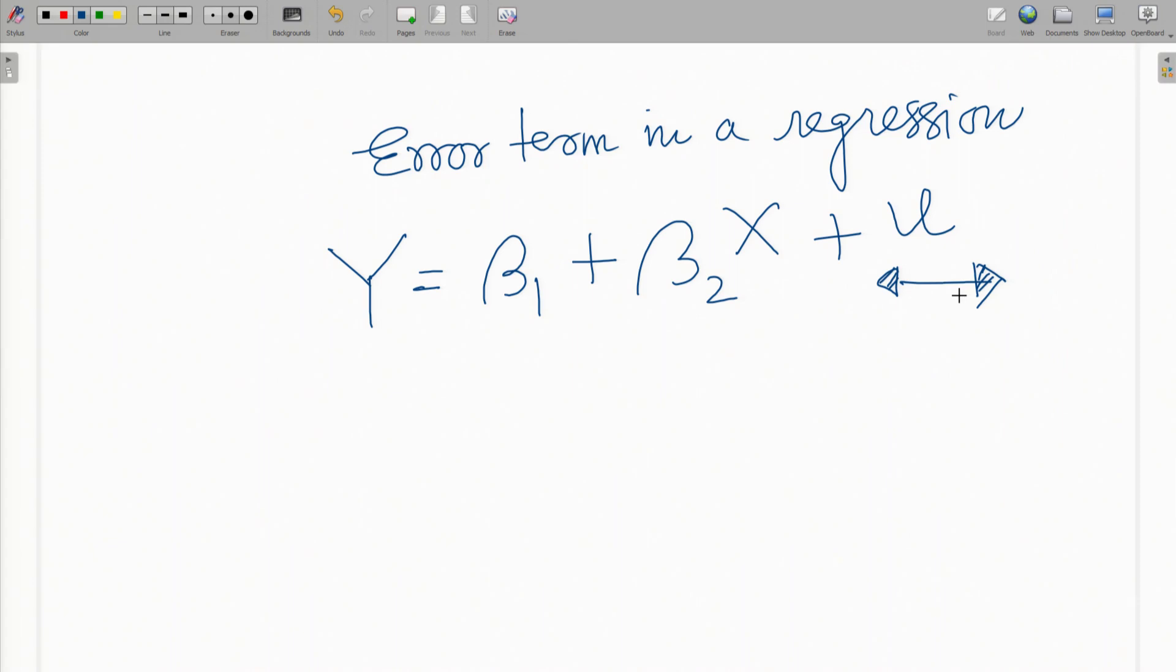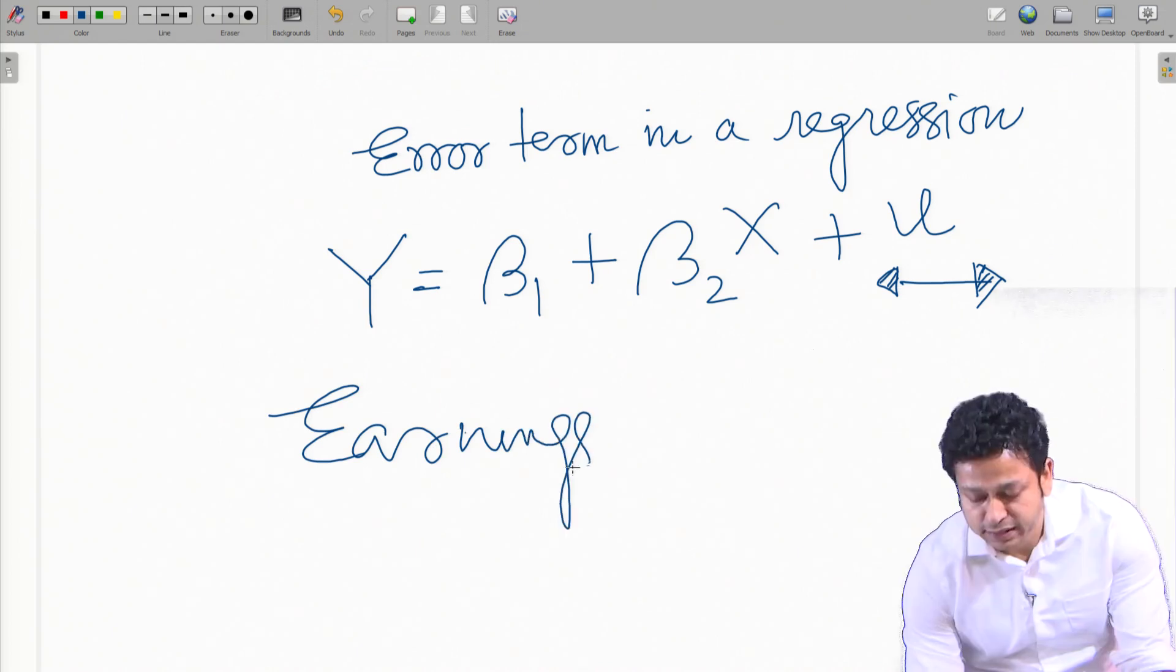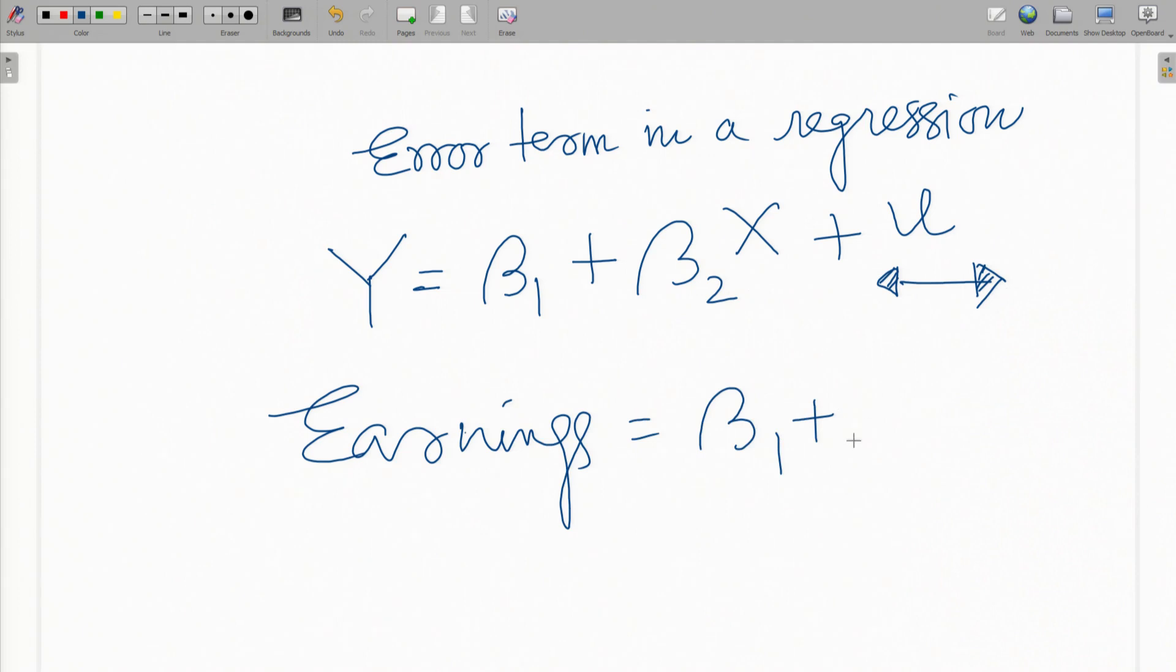To get an idea about how important this error term is, for example, when we run a regression on earnings from education and we have some error terms—if we run this very common equation with other explanatory variables and the R-squared value for this model is around 0.5 or even less than 0.5, we consider that model to be a good model.